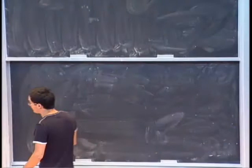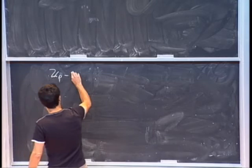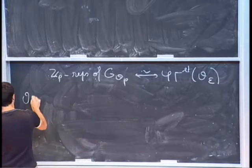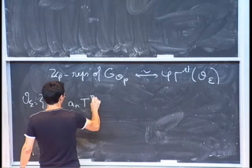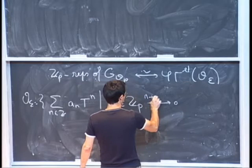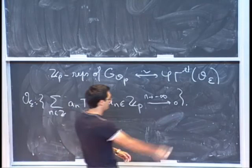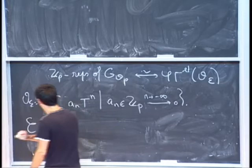Yesterday, we saw that we have an equivalence between Z_P representations of G_{Q_P} and étale phi-gamma modules over this ring O_E. Here O_E is the ring of power series sum of a_n T^n, where a_n is in Z_P and it goes to zero p-adically when n goes to negative infinity. I would like to promote this to an equivalence between Q_P representations and some étale phi-gamma modules over some other ring. This will have a name: it's called E, and it's just O_E with P inverted — in other words, the fraction field of O_E.